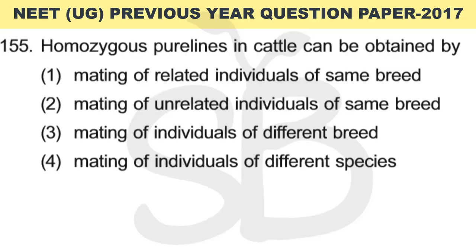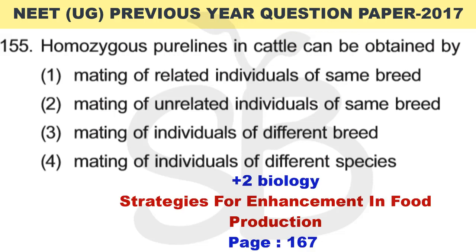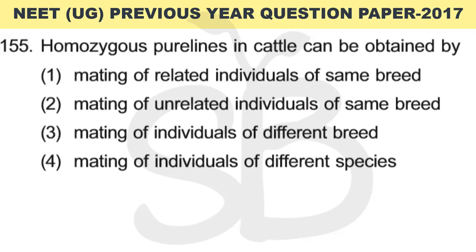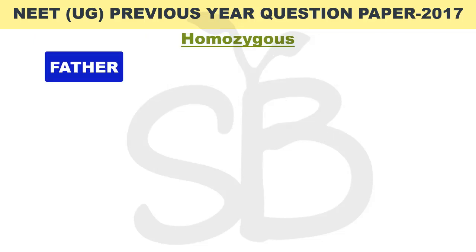Question number 155: Homozygous pure lines in cattle can be obtained by? This is from Plus 2 biology, chapter: Strategies for Enhancement in Food Production, page number 167, topic: Animal Breeding. We have two key terms to understand — first: what is homozygous condition? Second: what are pure lines?